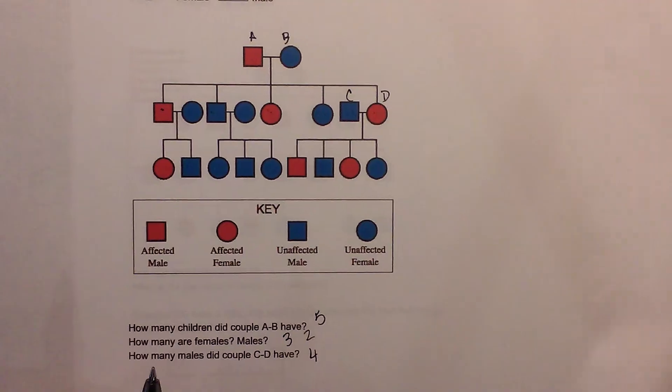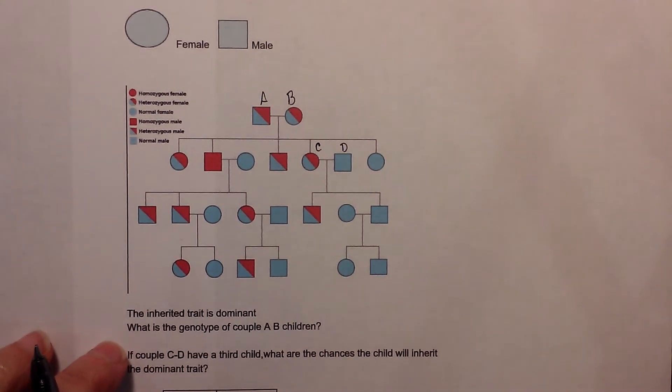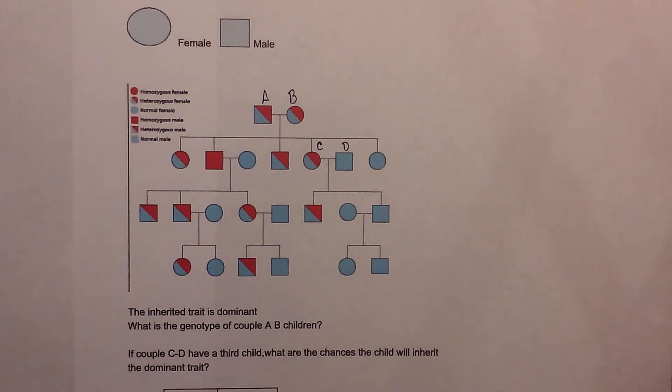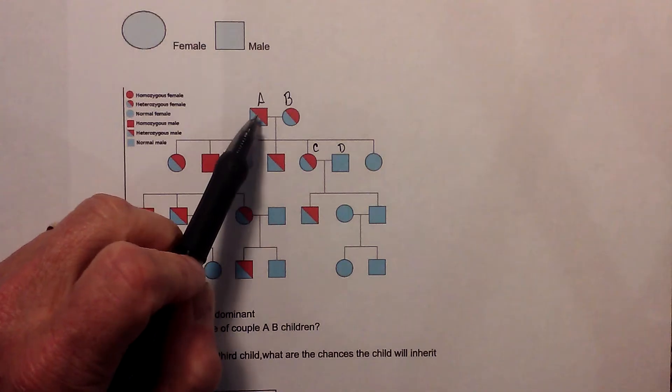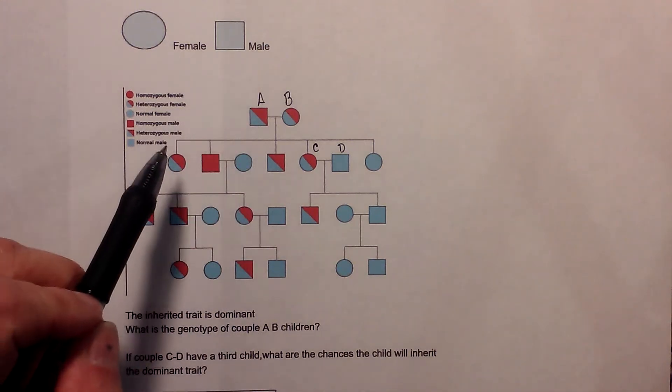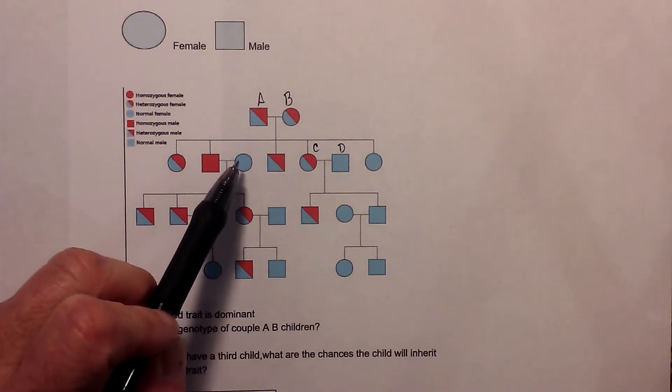Next, you can also set up Punnett squares or probabilities to see that a particular disease or trait may be inherited. For example, in this example we're gonna say that the inherited trait is dominant, it's not X-linked, and that it's gonna be a disease. We also know from our key that if they're shaded in halfway they will be heterozygous, and if they are completely shaded in they're homozygous. And then if they are this blue color they are normal.